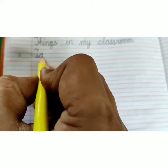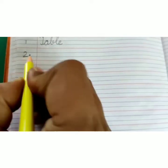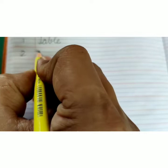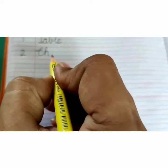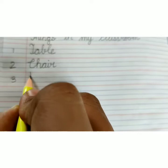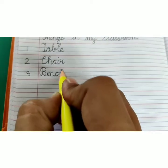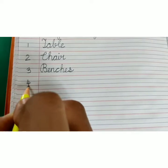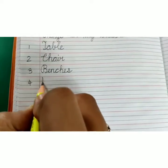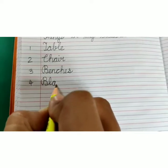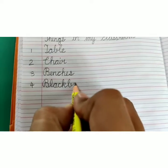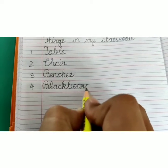Number 1: T-A-B-L-E, Table. Number 2: C-H-A-I-R, Chair. Number 3: B-E-N-C-H-E-S, Benches. Number 4: B-L-A-C-K-B-O-A-R-D, Blackboard.